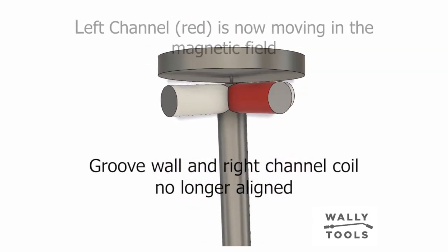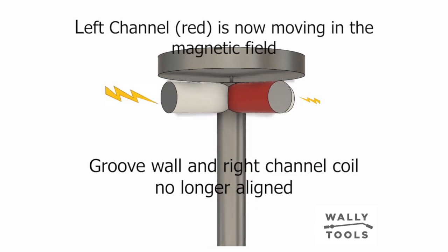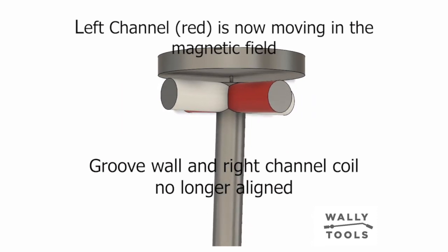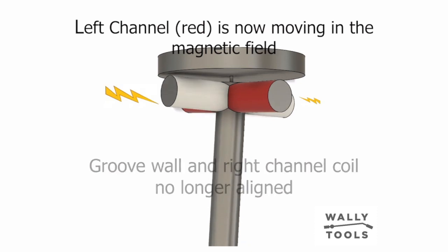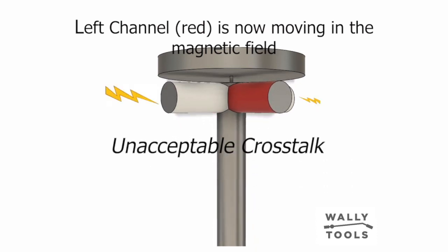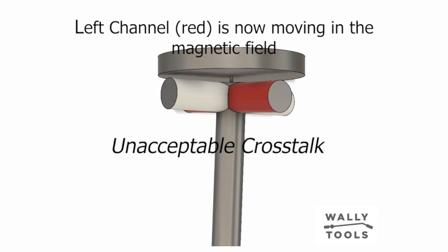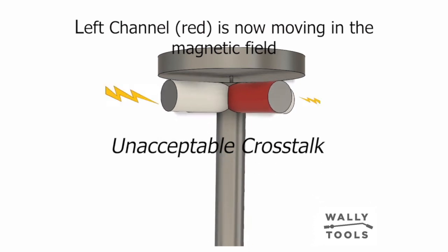As that same right channel signal is modulating the stylus and moving the coil former, the white coil formers, which correspond to the right channel signal, are moving like before. Now you'll see, as a result of this coil former misalignment...